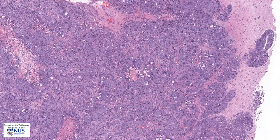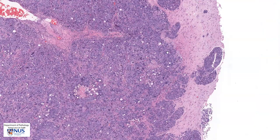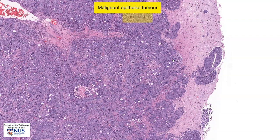So we have the presence of a high-grade tumour which is very cohesive. This cohesive appearance and these large cells are very suggestive of epithelial origin, so this is likely to represent a carcinoma. And because this is located in the brain, therefore, this is likely to represent metastatic carcinoma.